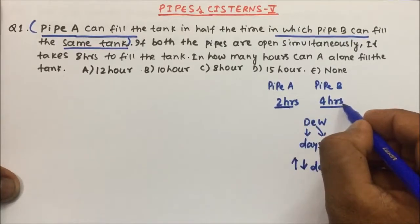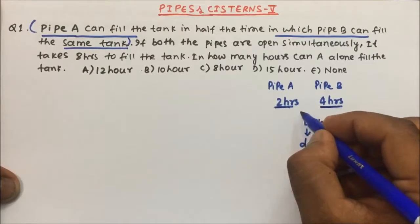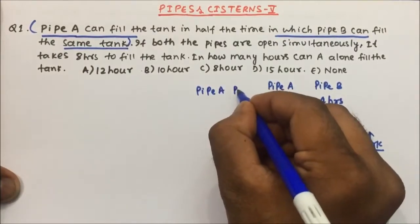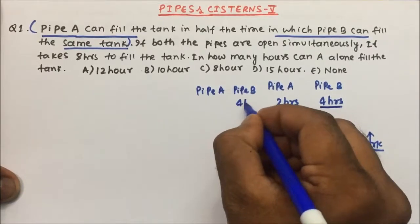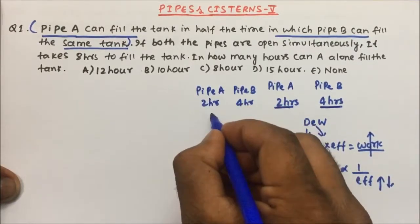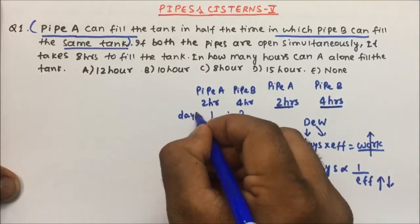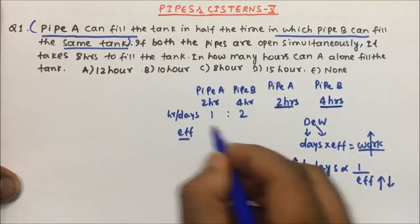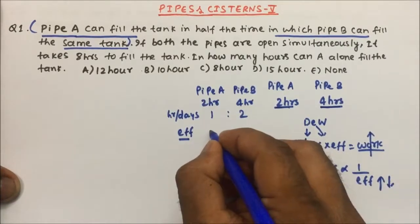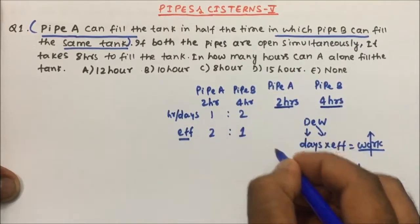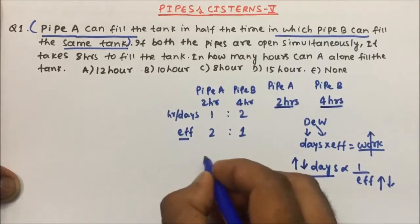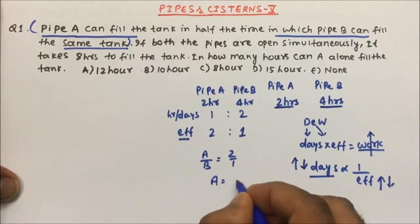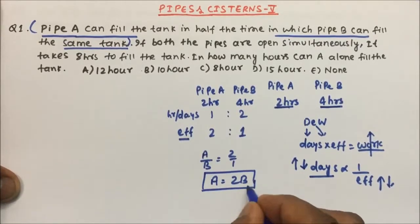Pipe A is taking half the time to fill the tank as Pipe B takes. If Pipe B takes 4 hours and Pipe A takes 2 hours, in terms of ratio that is 1:2. When we write this in terms of efficiency, it becomes inverted — efficiency ratio will become 2:1. So A by B efficiency is 2:1, meaning A equals 2B.